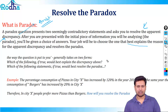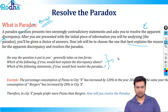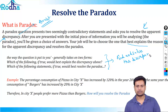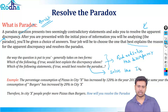Typically, paradox questions take two forms. First: 'Which of the following, if true, would best explain the discrepancy above?' — where you find and solve the discrepancy. Second: 'Which of the following, if true, would best resolve the paradox?' — where you solve the issue at hand.